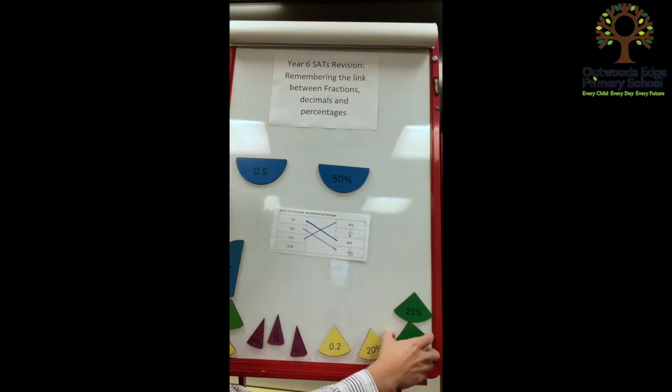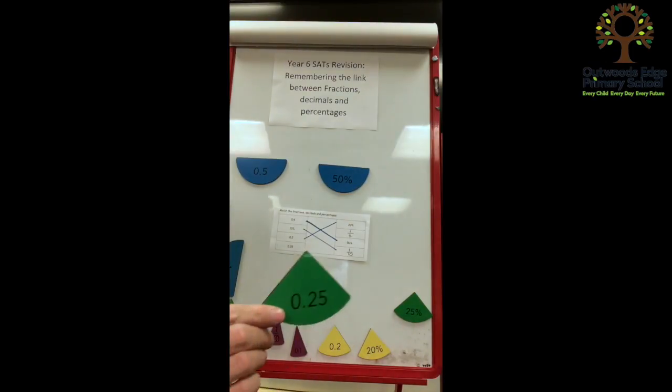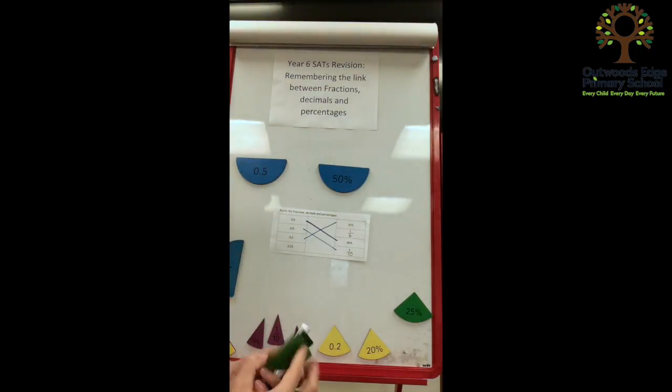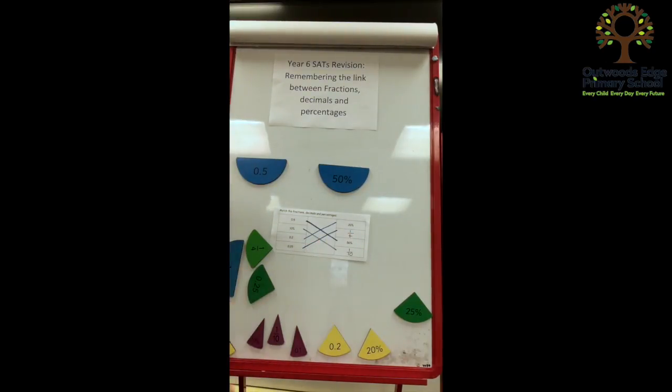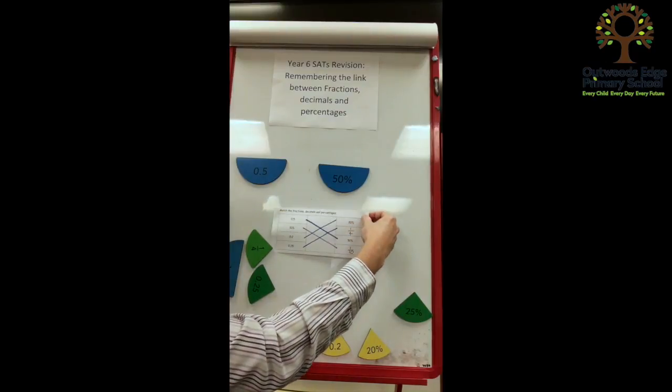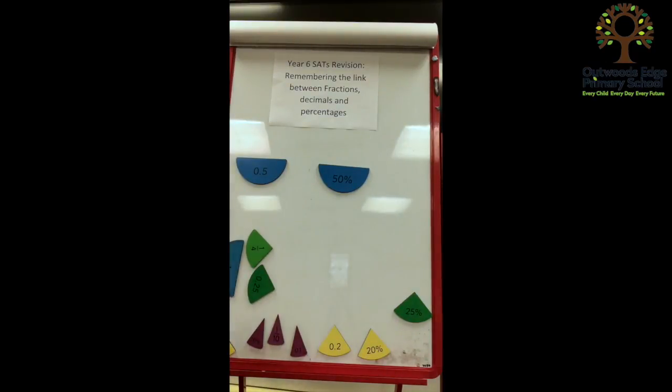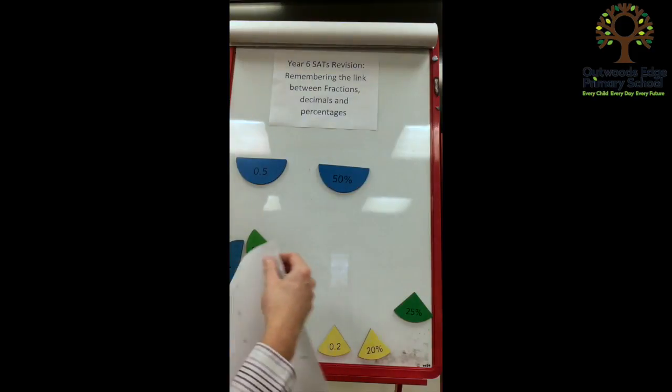Which leaves us with 0.25, this is the one that I said they had to try and memorise, being equivalent to a quarter. And they can use that knowledge to help them solve this fairly straightforward matching puzzle. Now this type of puzzle might be presented in a slightly more challenging way.